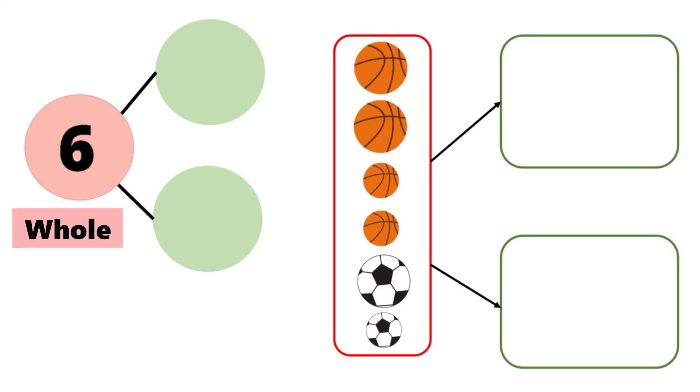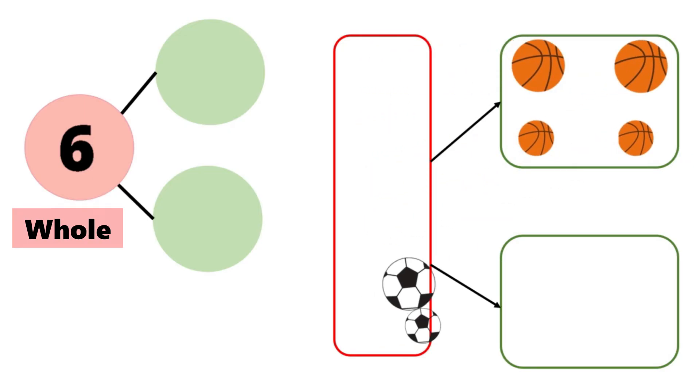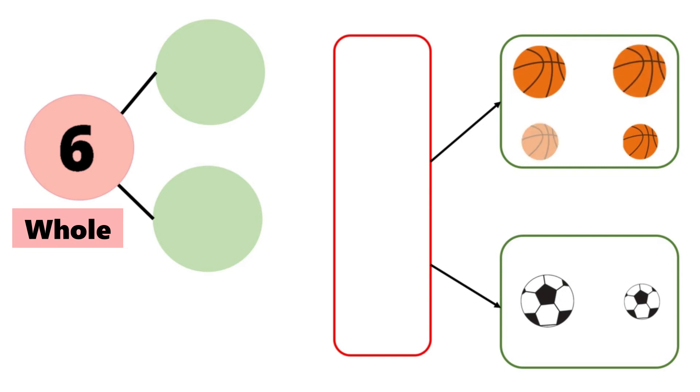Some are basketballs, some are soccer balls. So let's split them up into two parts. How many basketballs are there? One, two, three, four. Four basketballs.